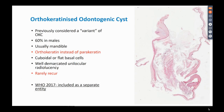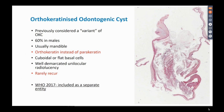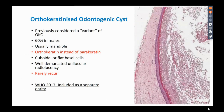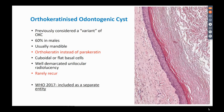Orthokeratinized odontogenic cyst was previously considered a variant of odontogenic keratocyst, but is now recognized as a separate entity. It is still more common in the mandible, but shows orthokeratin instead of parakeratin. You don't tend to see the striking basal cell palisading characteristic of odontogenic keratocyst. Here you can see quite prominent orthokeratosis, and the basal cells of this epithelial lining are cuboidal rather than columnar and don't show palisading. These also rarely recur.